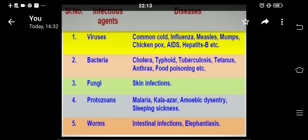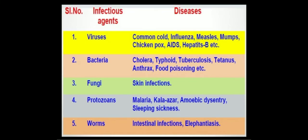Infectious diseases are the diseases that spread through infectious agents. Common examples of some infectious agents are viruses, bacteria, fungi, protozoans, and worms.